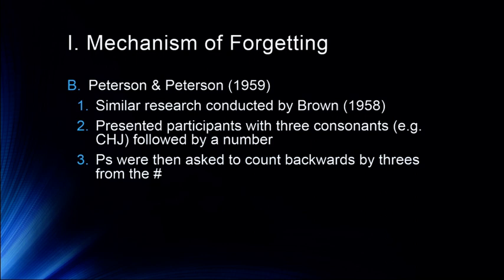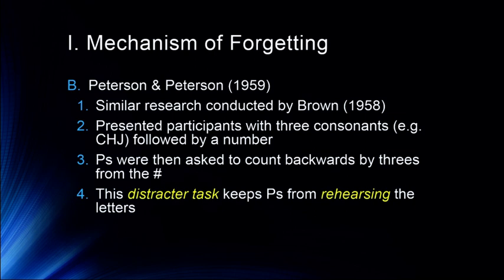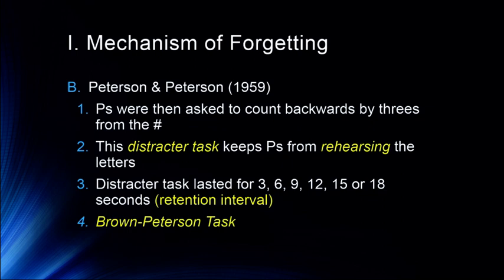In the Brown-Peterson task, participants were presented with three consonants to remember — something like CHJ — followed by a number. Participants were then asked to count backwards by threes from that number: 100, 97, 94, 91, 88, 85, and so on. This counting backwards is called a distractor task — it keeps participants from rehearsing those letters. Without it, everyone would get 100% by just repeating the letters. The distractor task lasted for 3, 6, 9, 12, 15, or 18 seconds — this time period is called the retention interval.